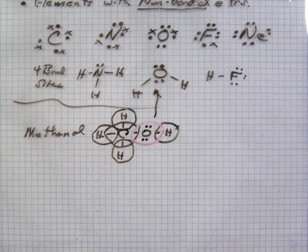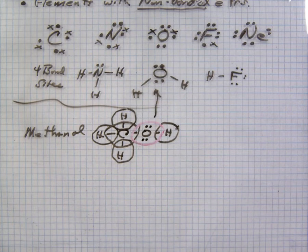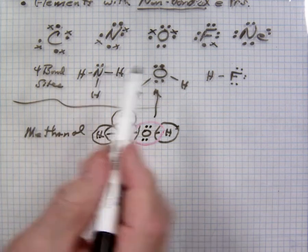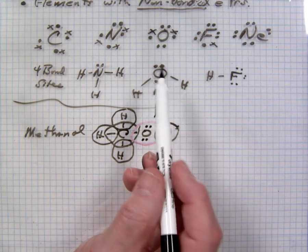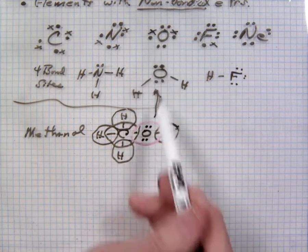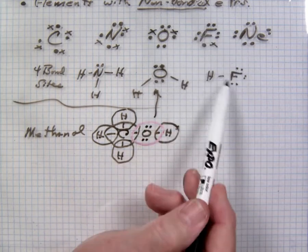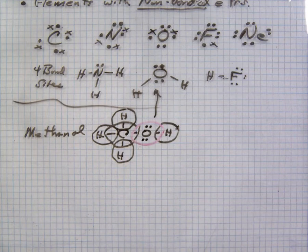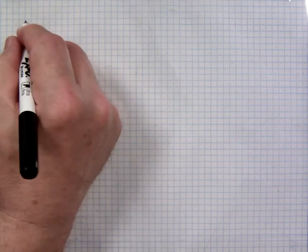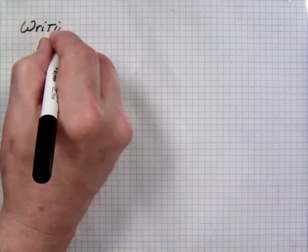Nitrogen carries one non-bonded pair — it has five valence electrons, needs three, so only two electrons are left over as one non-bonded pair. Oxygen has six electrons and needs two more to reach the octet, so it has two bonds and two non-bonded pairs, like in water. Fluoride has one bonded pair but three non-bonded pairs. Understanding the electron structure is very important for putting molecules together. This topic is writing and drawing Lewis dot structures.